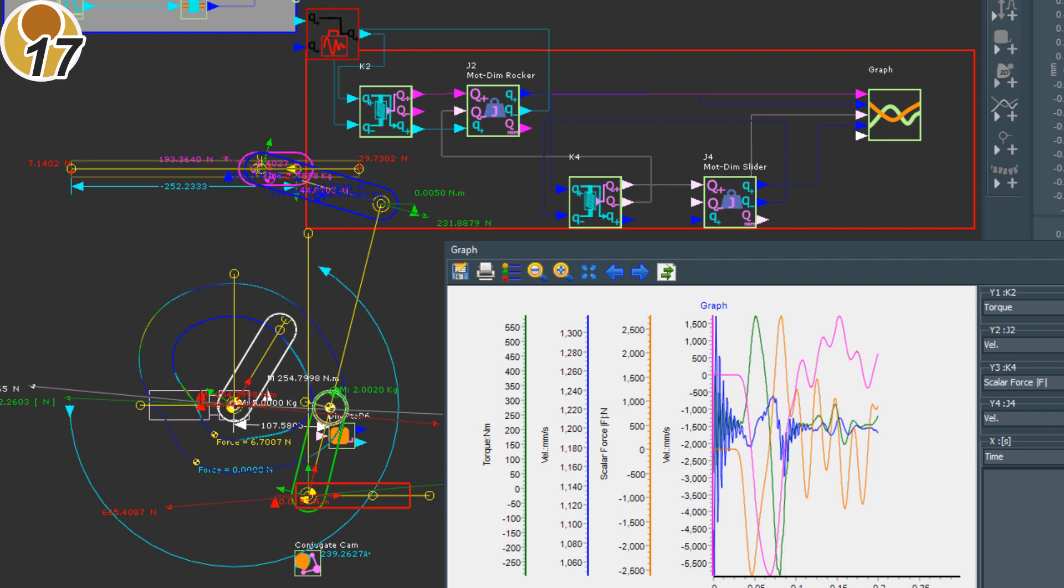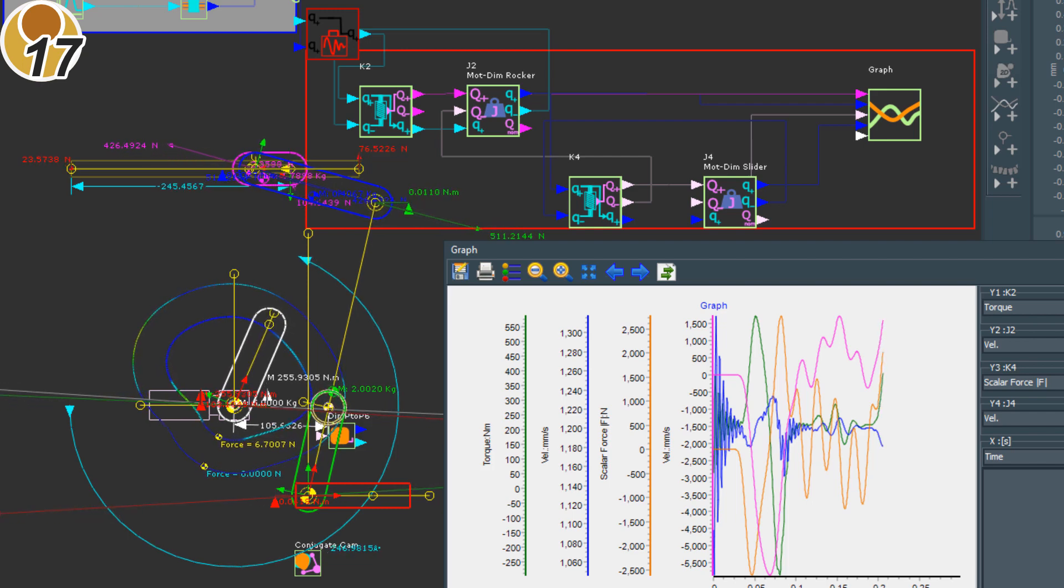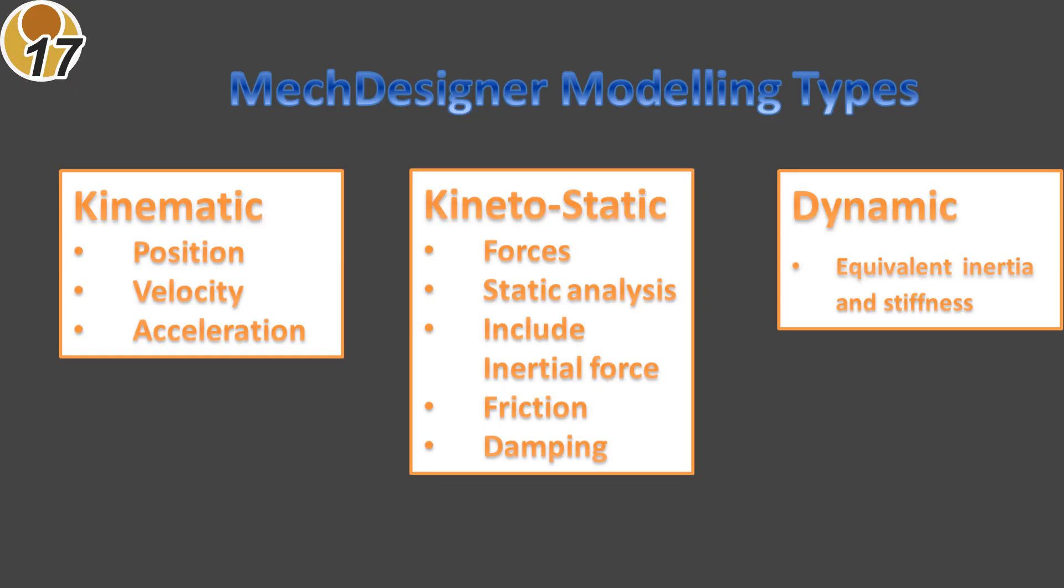First though, let's review the different types of analysis available in Mech Designer. There are now three different types of analysis. First, Mech Designer calculates the positions, velocities and accelerations of all links in the mechanism when driven by a linear or non-linear motion. This is typically referred to as kinematic analysis. There is no reference to forces or the physical properties of the links and there are no degrees of freedom. The analysis is purely geometric.